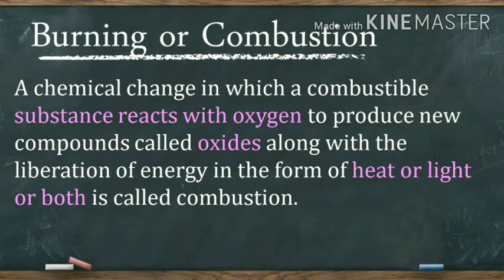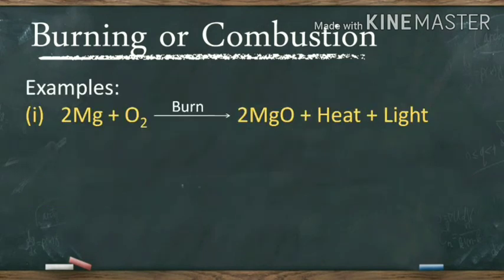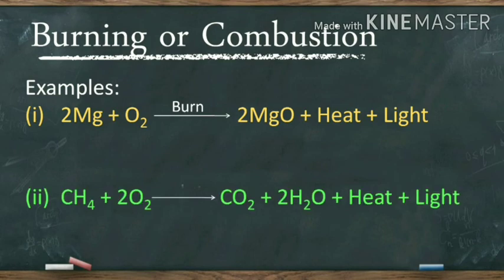Note that combustion always takes place in the presence of oxygen. When magnesium is burnt in the presence of oxygen, it reacts to form magnesium oxide, and a lot of heat and light is produced. If we burn methane in the presence of oxygen or air, it forms carbon dioxide and water along with the evolution of heat and light. There are two main conditions required for burning or combustion.